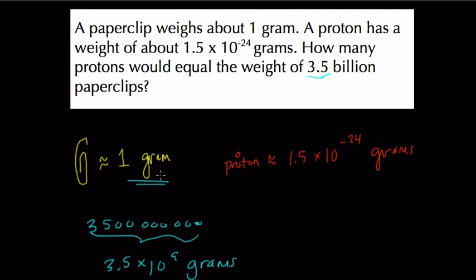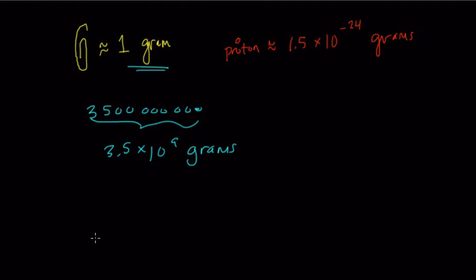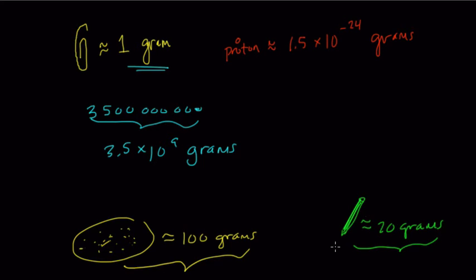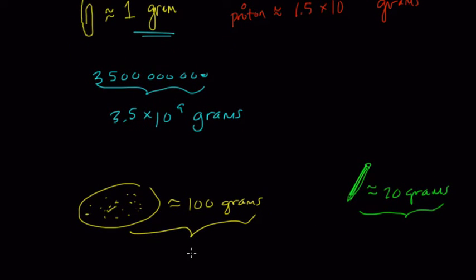What do we want to know? How many protons would we need to get that weight? It's such extreme scale, so let's model by looking at a simpler case. If I had a very large cookie that weighs 100 grams, and another item — this green stick, let's say it weighs about 20 grams — how many of these sticks would you need to equal the weight of the cookie? Intuitively you know it's 5. The calculation is 100 divided by 20, which gives you 5. So the key operation here is division.